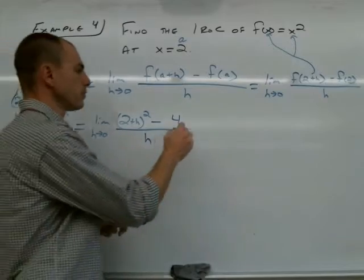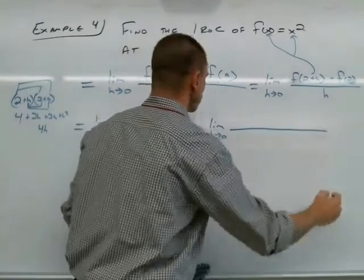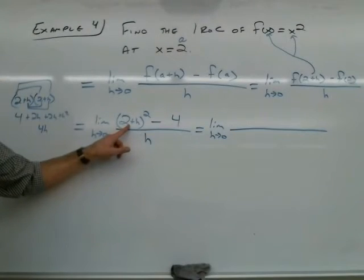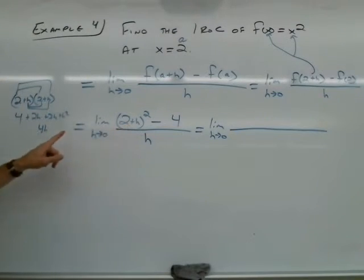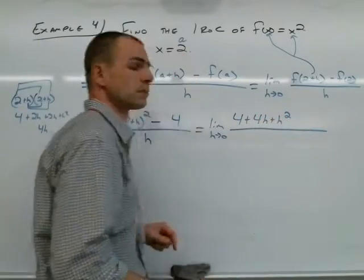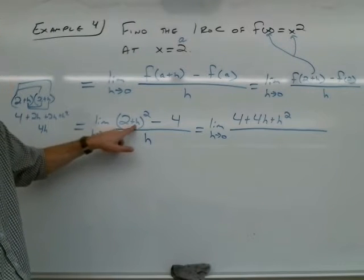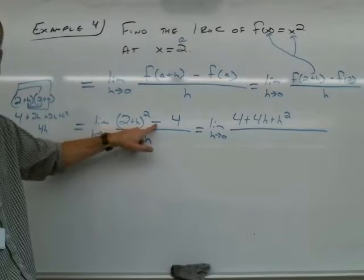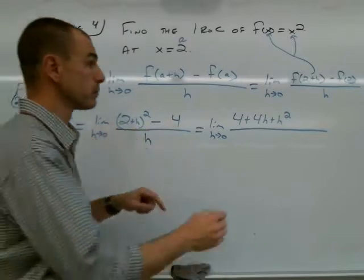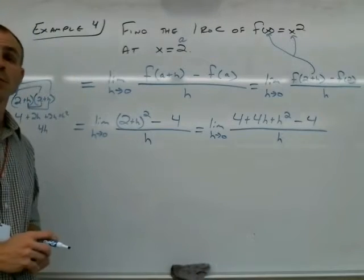Now let's come back to our regular problem. We still have our limit. Instead of writing the binomial 2 plus h squared, we're going to write its expansion, which is 4 plus 4h plus h squared. That's the same expression as this expression right here. And we have our minus sign and then our 4. And we're still dividing by h.